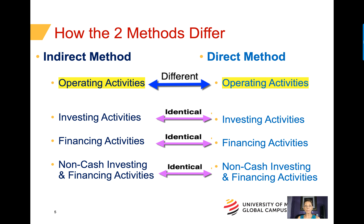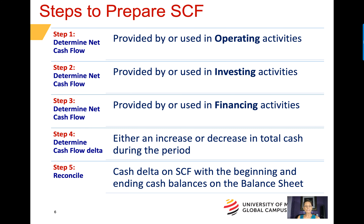It is important to note that the operating activities section on the statement of cash flows is the only section that differs. In other words, the direct method and the indirect method of preparing the statement of cash flows are identical in the investing, financing, and non-cash flow investing and financing activities sections. The statement of cash flows is always prepared with the sections listed in the same order: net cash provided by or used by operating activities, then investing activities, then financing activities, and at the bottom, non-cash flow investing and financing activities.